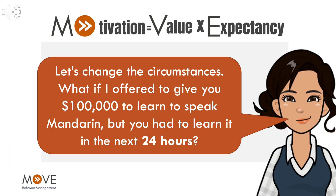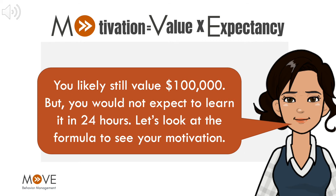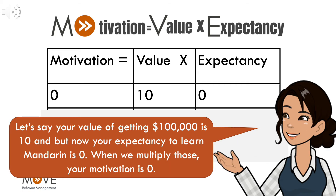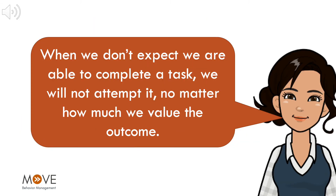Let's change the circumstances. What if I offered to give you $100,000 to learn to speak Mandarin, but you had to learn it in the next 24 hours? You likely still value $100,000, but you would not expect to learn it in 24 hours. Let's say your value of getting $100,000 is still 10, but now your expectancy to learn Mandarin is 0. When we multiply those, your motivation is 0. When we don't expect we are able to complete a task, we will not attempt it, no matter how much we value the outcome.